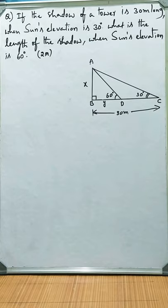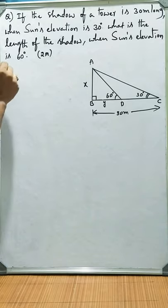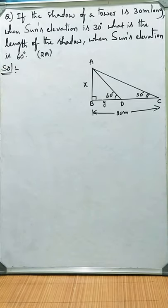If the shadow of a tower is 30 meters long when the sun's elevation is 30 degrees, what is the length of the shadow when sun's elevation is 60 degrees? It is a simple math question. Let us see how we solve this given problem.